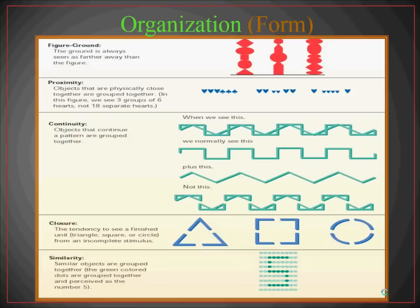Closure is the tendency to see a finished unit — like a triangle, square, or circle — from an incomplete stimulus. When you look at an image, these are just random angles, but your perception can close them and say this actually forms a single unit. And lastly, with similarity, similar objects are grouped together — like green colored dots grouped together so we perceive the number 5. Like an older-style scoreboard where you light certain bulbs up, you start to form and see numbers, not just randomly lit shapes.